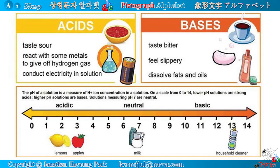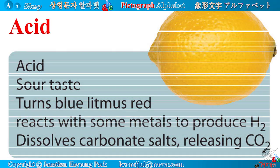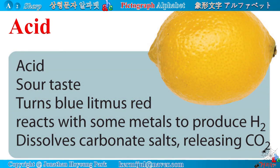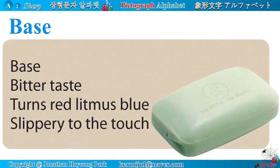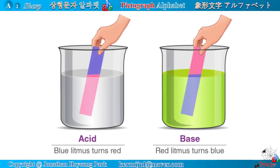Solutions measuring pH 7 are neutral. For example, lemons and apples are acidic, household cleaners are basic, and milk is neutral. Acids taste sour, react with some metals to give off hydrogen gas, and conduct electricity in solution. Bases taste bitter, feel slippery, and dissolve fats and oils. Acid turns blue litmus red, and base turns red litmus blue.